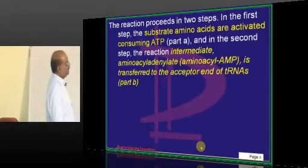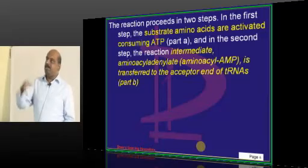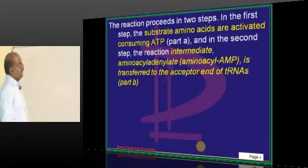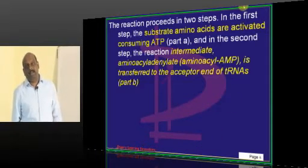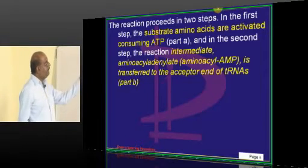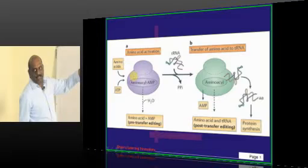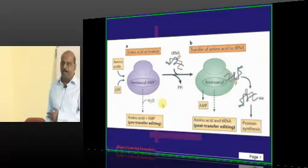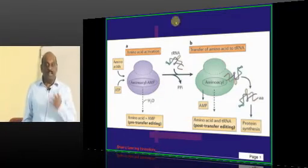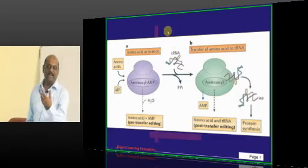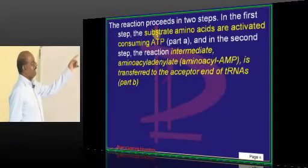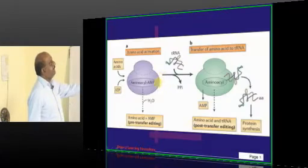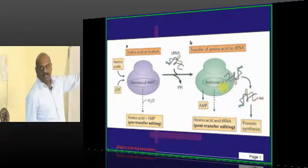Now, the amino acid comes and attaches to the tRNA in two steps. In the first step, the amino acid must be activated by consuming one ATP. In the second step, it is transferred to the acceptor site of the tRNA, which is the 3' end.